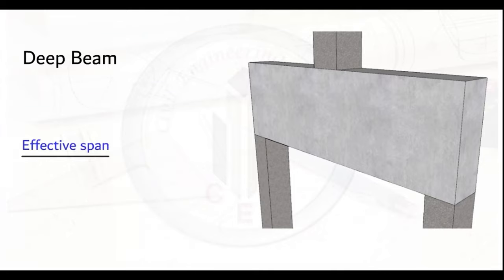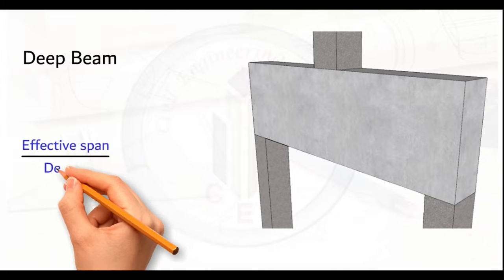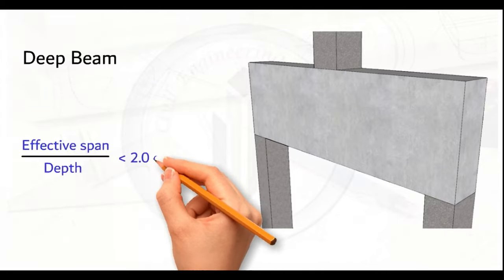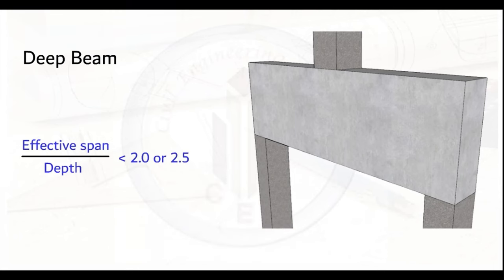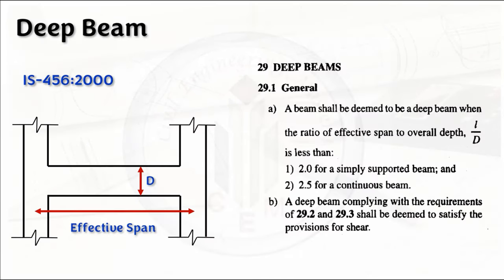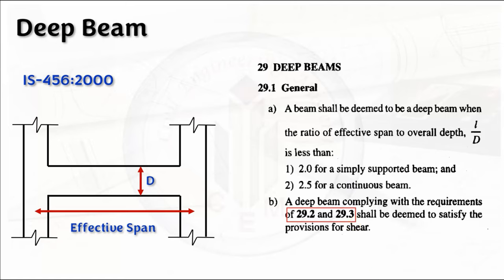When the load is applied on the beam, it tends to fail in diagonal directions. In deep beams, the effective span-to-depth ratio needs to be less than 2 or 2.5, as per IS 456-2000. In clause 29.1, it is given that the l/d ratio is less than 2 for simply supported beams and 2.5 for continuous beams.